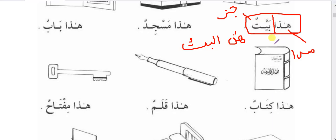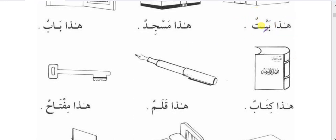The isma ishara and musharunile relationship is like mosuf-sifat: they should be equal in irab, gender, quantity, and whether proper or common. In the real isma ishara-musharunile construction, all four rules must apply. Since baitun is nakera, it cannot function as musharunile, because musharunile must be maarefa. Furthermore, isma ishara and musharunile together always make an incomplete sentence — they cannot form a complete sentence on their own.